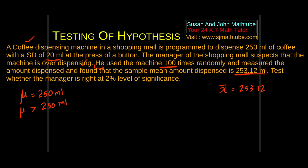We are going to predict or talk about the population — the coffee dispensed by the machine yesterday, today, and even tomorrow — using just 100 samples. In a shopping mall, thousands of people will come and the machine will be used thousands of times. But they are going to talk about the population using a few samples, and that also with some level of confidence.